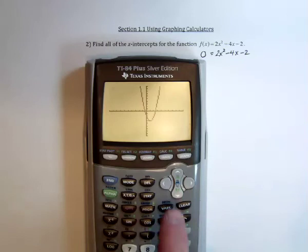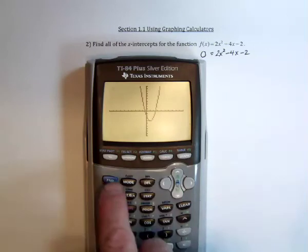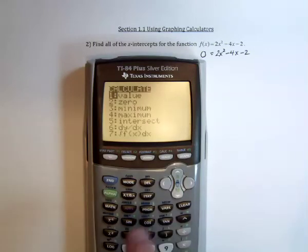To find those values exactly, we're going to use calculate. Second, calculate. And it's number 2 that we're going to be working with, the 0.